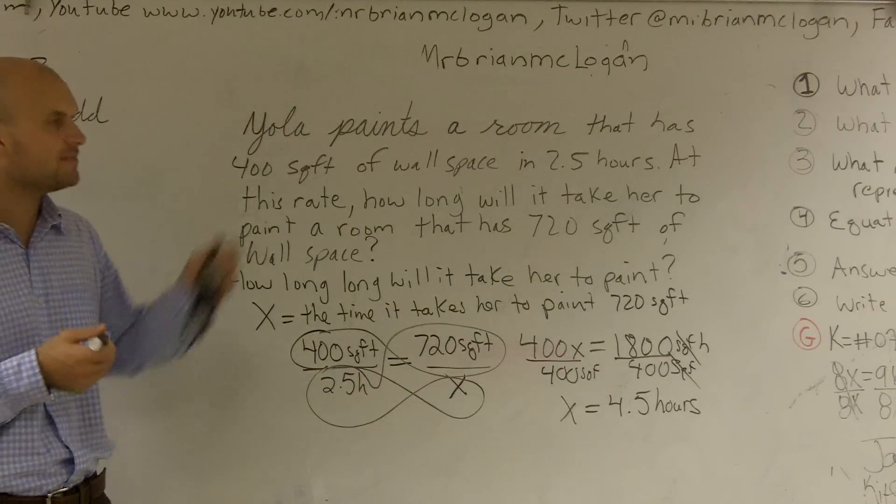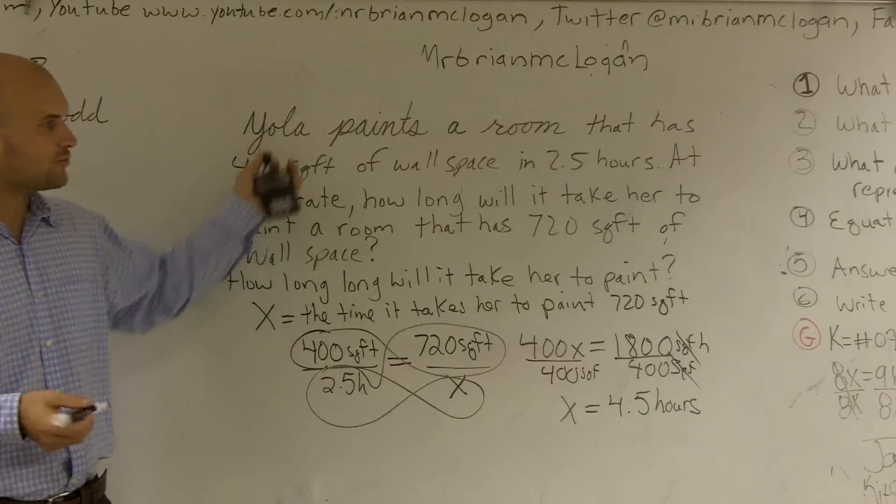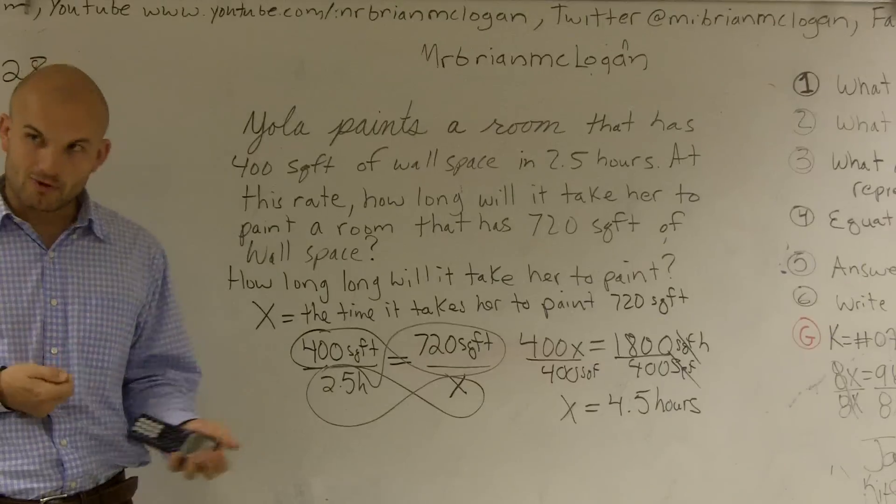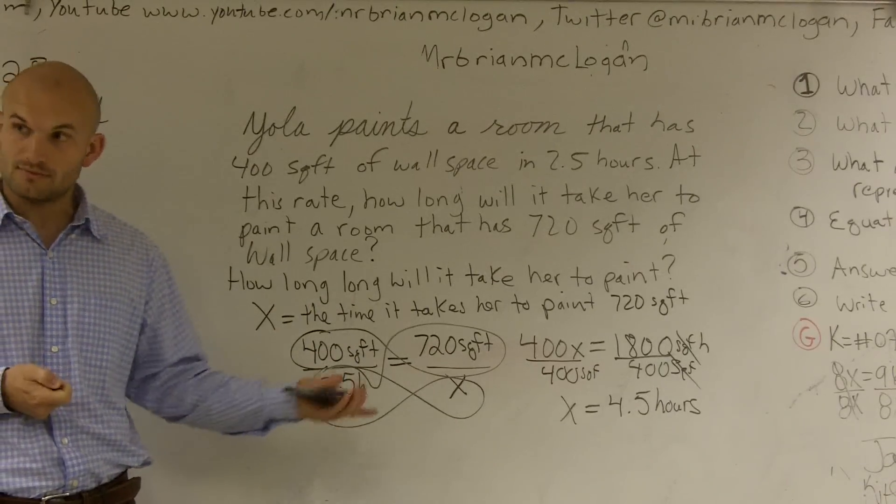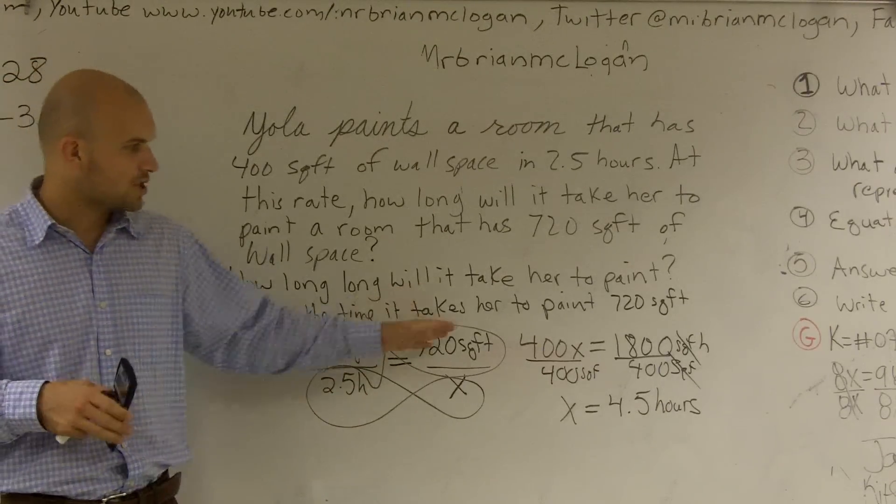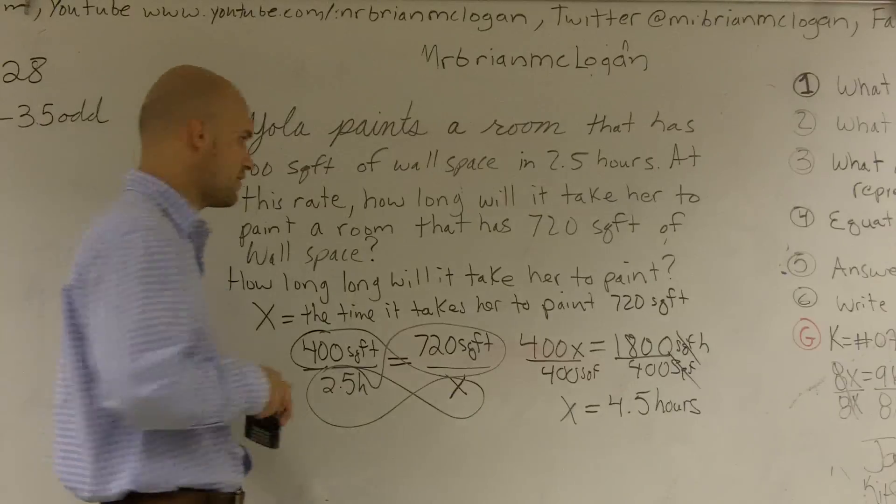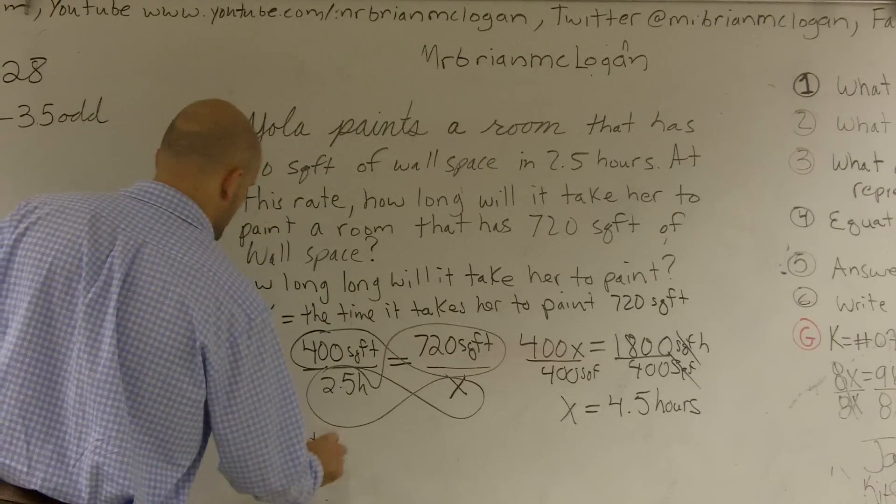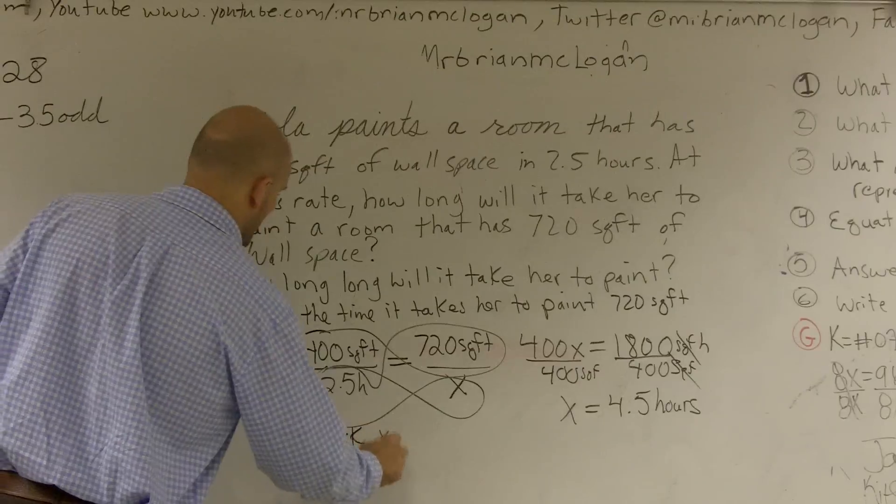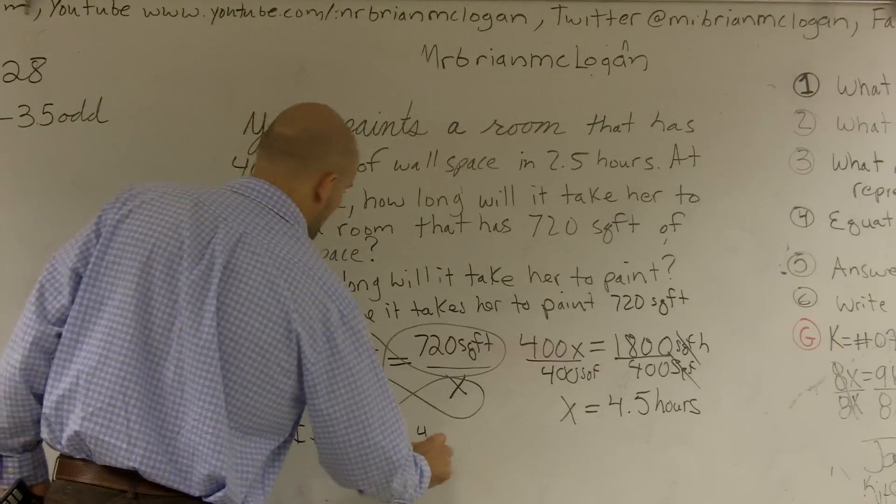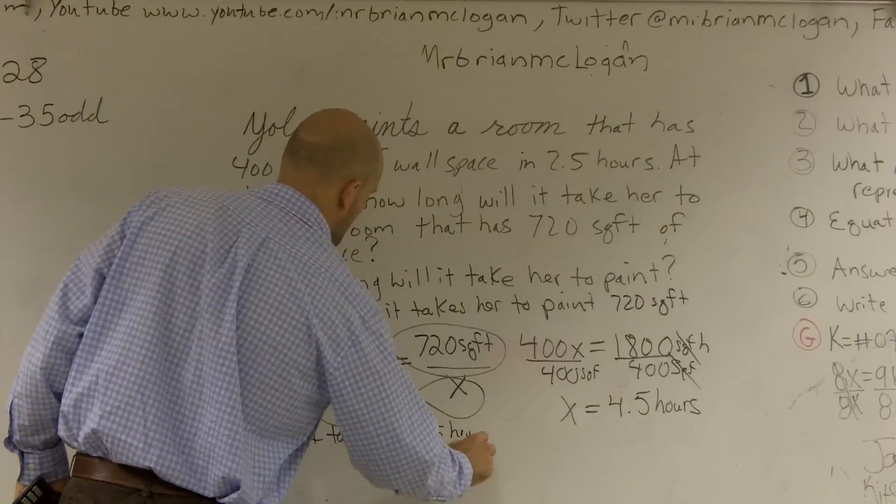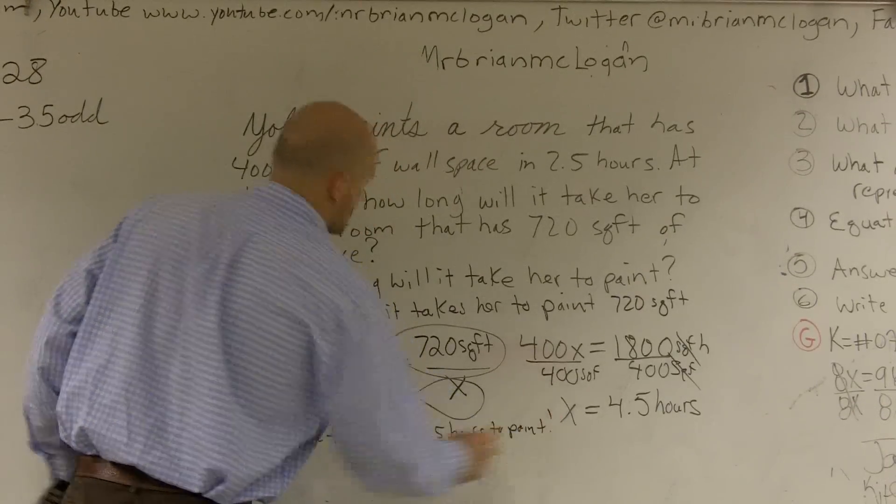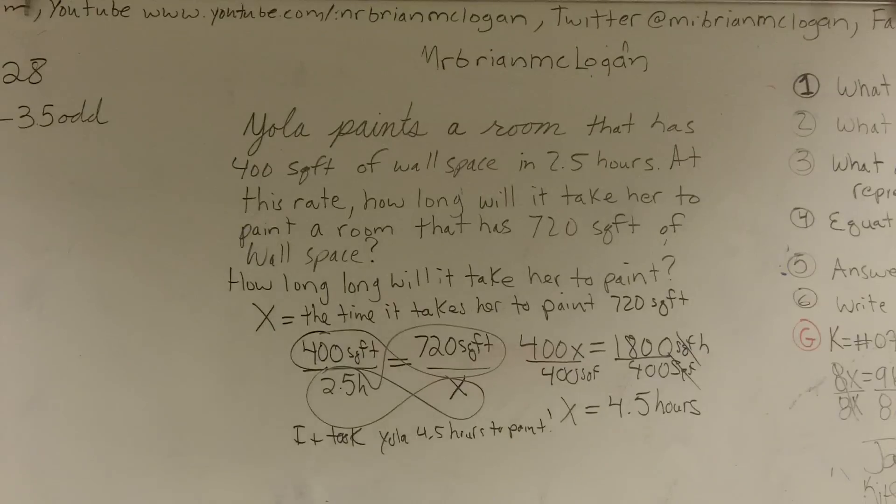All right? So just make sure, guys, when you have a word problem that you set it all up. You read through, find the question. Set up your variable. Write out your equation, which this one was a proportion as my equation. And then solve and then make sure you write it out. So therefore, then write it all the way out. So you can say, it took Yola 4.5 hours to paint. All right? There we go. Let's have a good weekend. Yay!